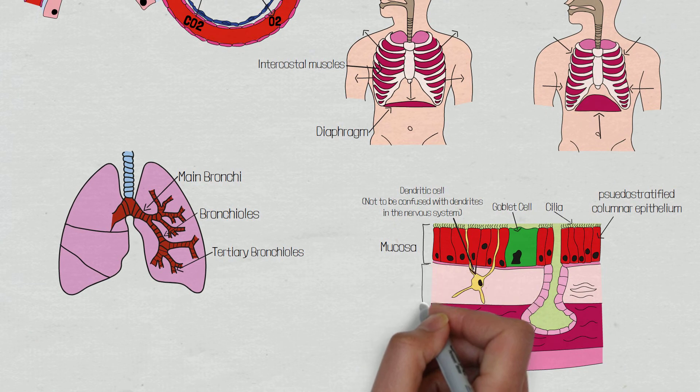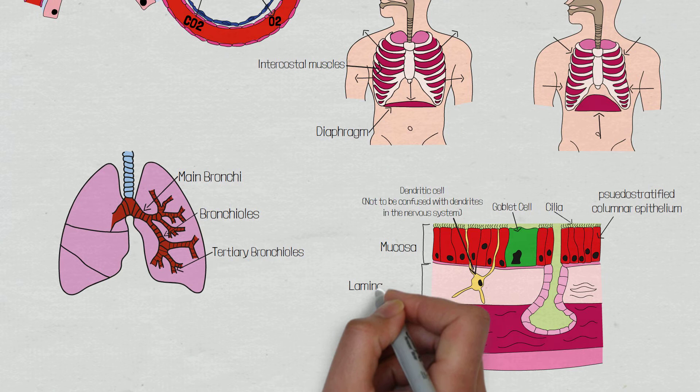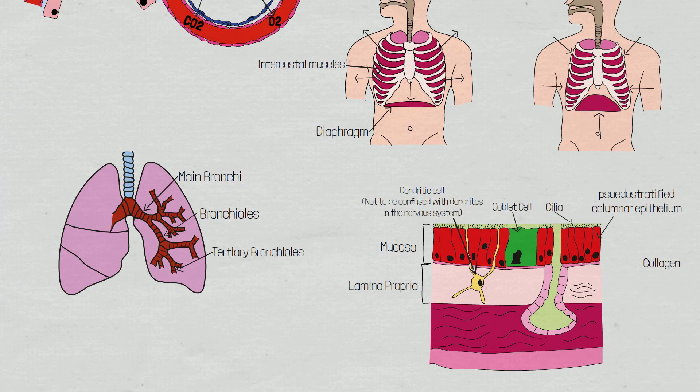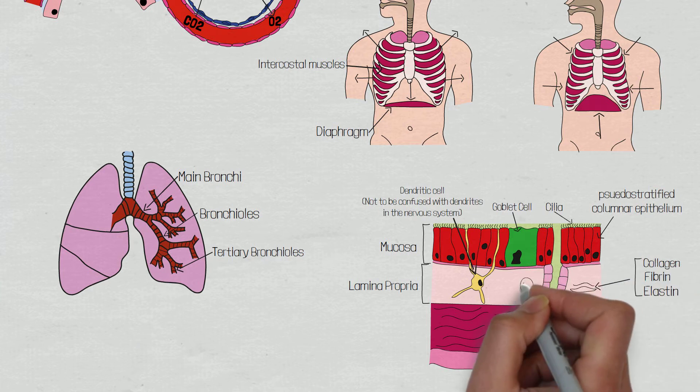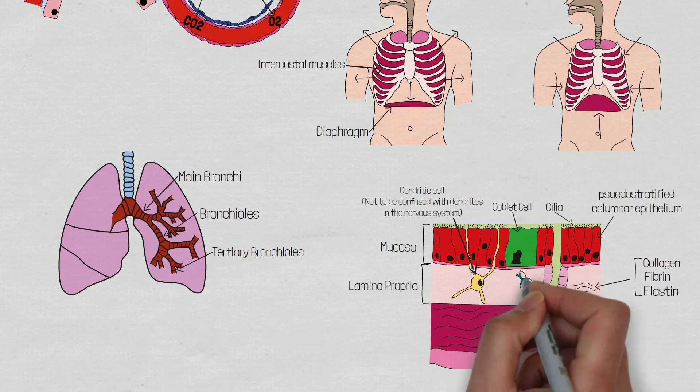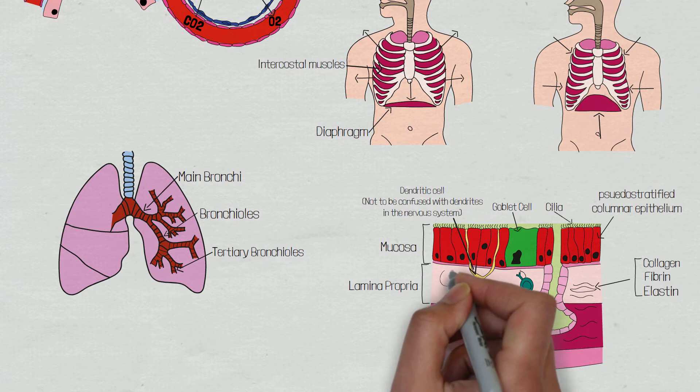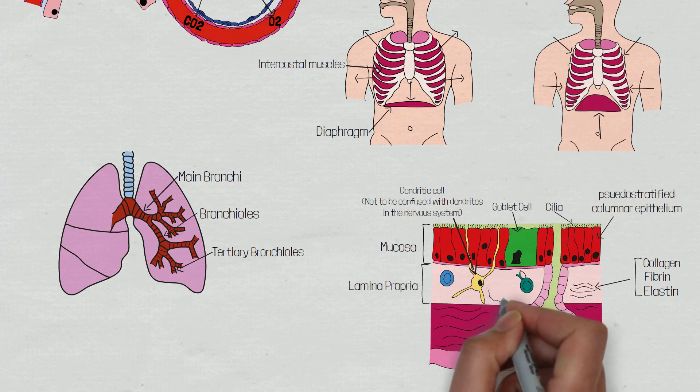Below the basement membrane is the lamina propria, which consists mainly of collagen, fibrin, elastin, T-helper 2 cells, B cells, and mast cells.